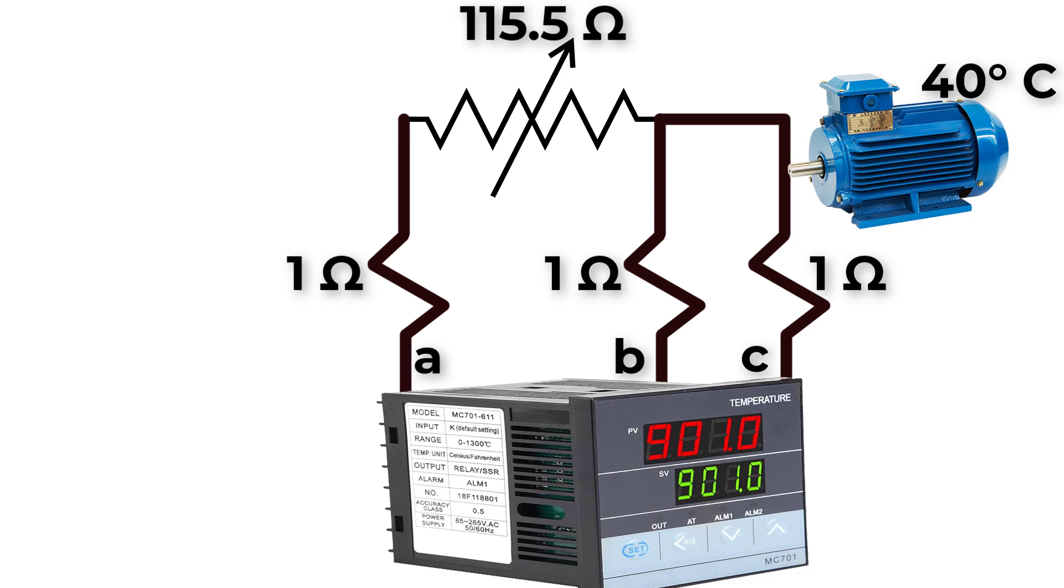The device will measure the value between point B and C. This is the resistance of two wires. So, RBC will equal 1 ohm plus 1 ohm, which is equal to 2 ohm.